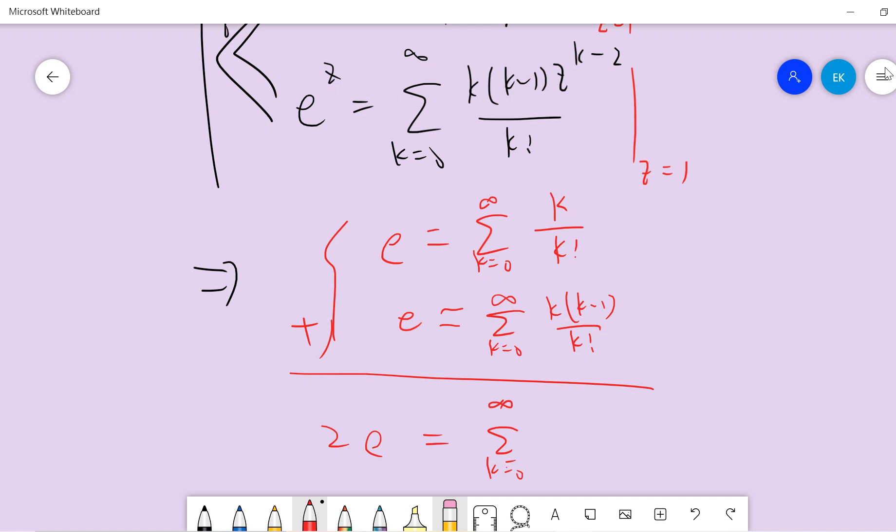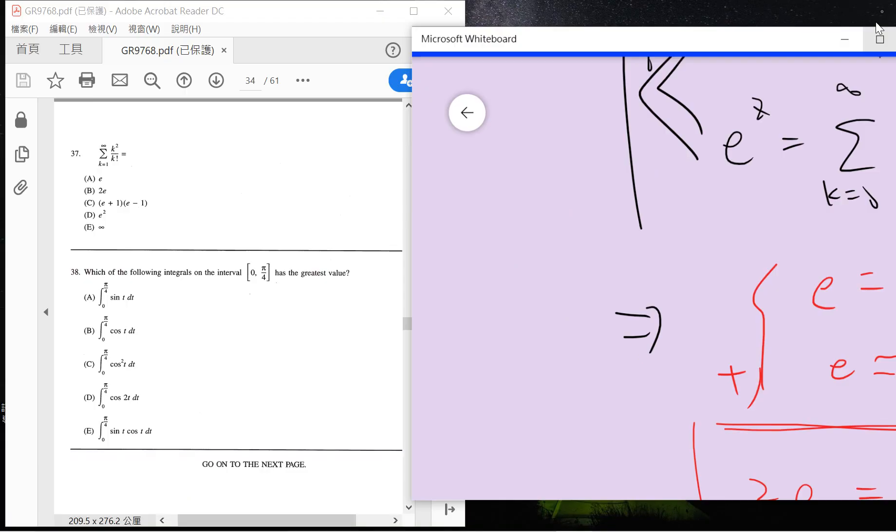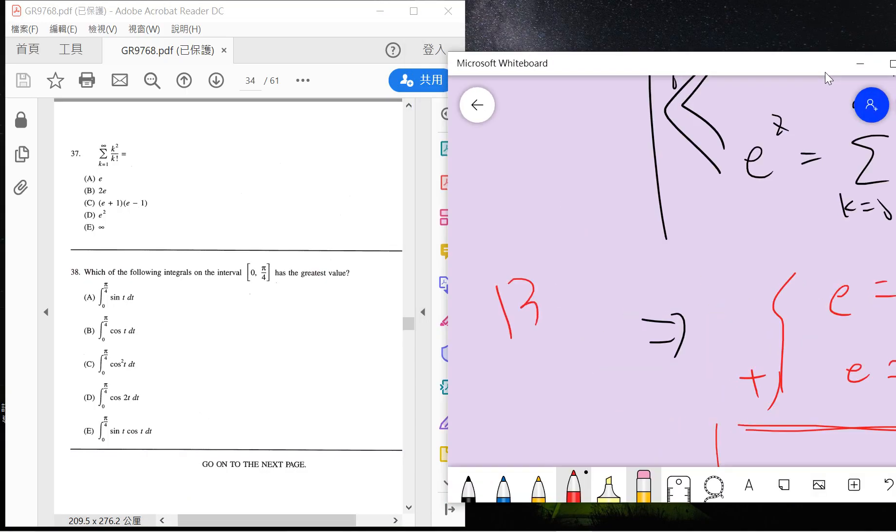So it's k squared over k factorial, and the answer is b, 2e. Simple, right?